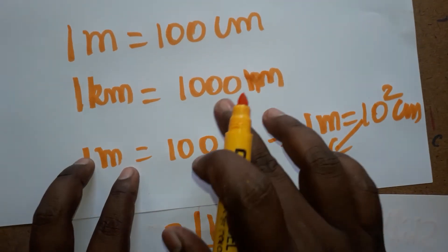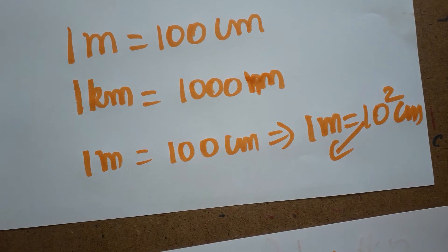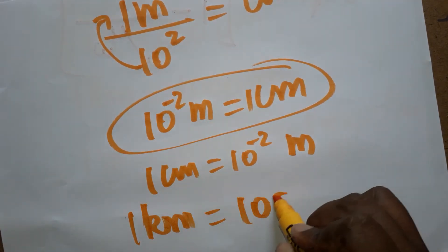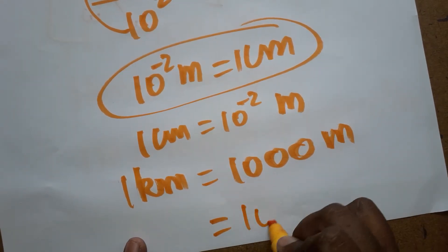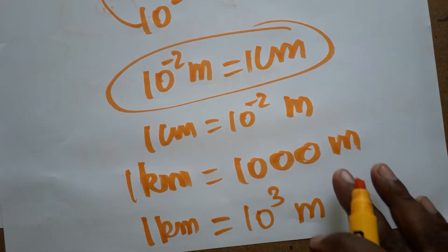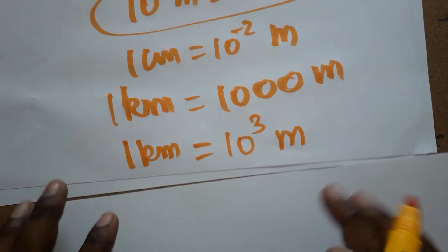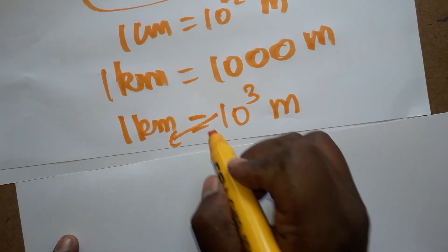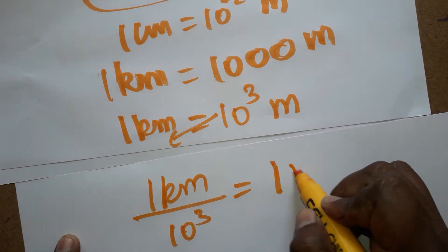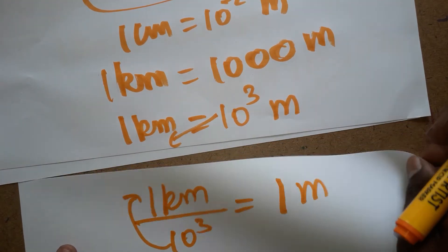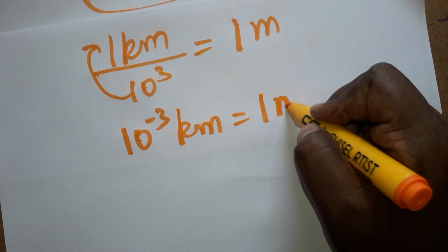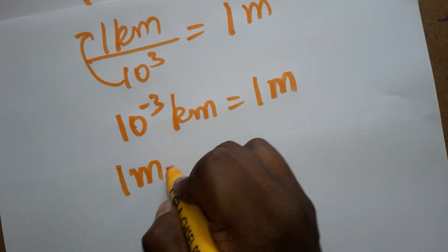Now, one meter is equal to how many kilometers? One kilometer is one thousand meters, which is 10 power 3 meters. So one kilometer equals 10 power 3 meters. Bringing 10 power 3 to the denominator: one meter equals one divided by 10 power 3 kilometers. Taken as a numerator: 10 power minus 3 kilometer equals one meter. So one meter is equal to 10 power minus 3 kilometer.